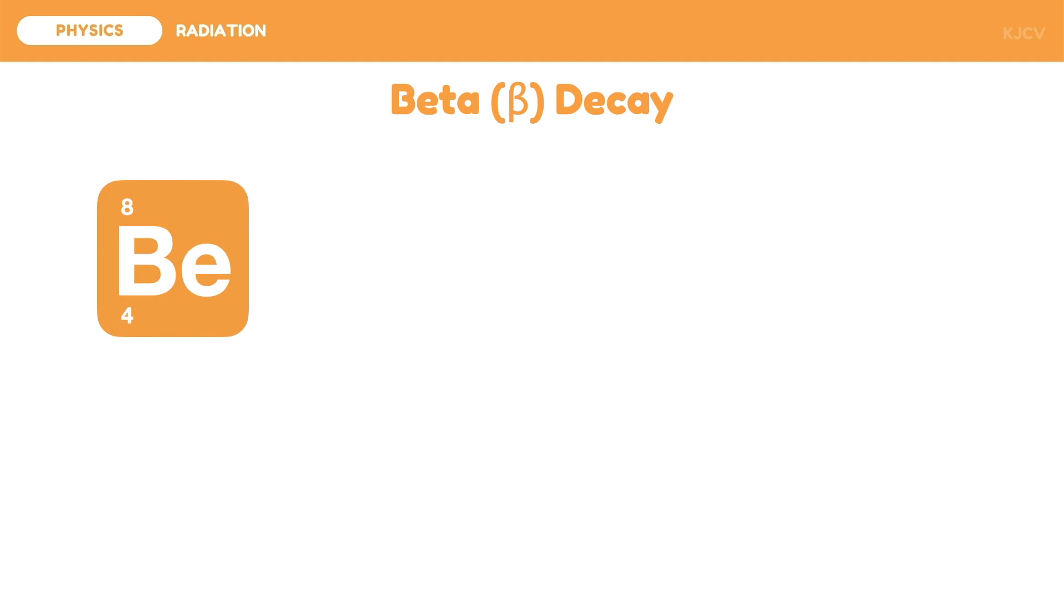Suppose we have beryllium, which has an atomic mass of eight and atomic number of four. In beta decay, the atom may have excess neutrons. In this case, there will be no change on the atomic mass, but one neutron will become a proton that will stay in the atom and an electron that will be given off.